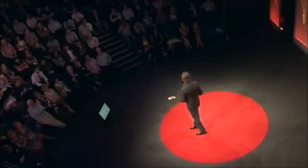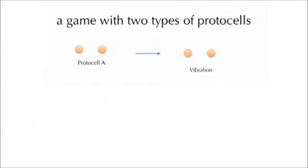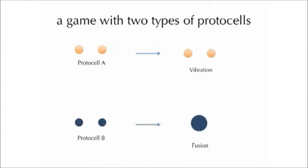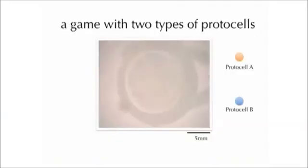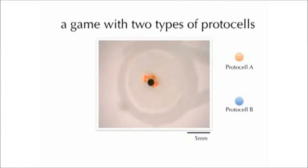Now that you're all experts on protocells, we're going to play a game. We're going to make two different kinds. Protocell A has a certain kind of chemistry inside that when activated, the protocell starts to vibrate around — just dancing. The second protocell B has a different chemistry inside, and when activated, the protocells all come together and fuse into one big one. We put these two together in the same system. Population A, population B — we activate the system, and protocell Bs, the blue ones, all come together, fuse together, form one big blob, while the other protocell just dances around, until all of the energy in the system is basically used up and then game over.